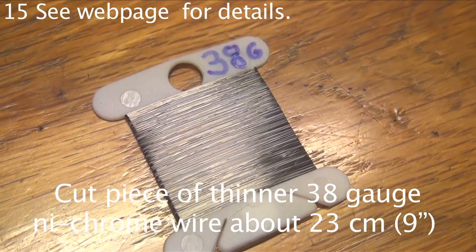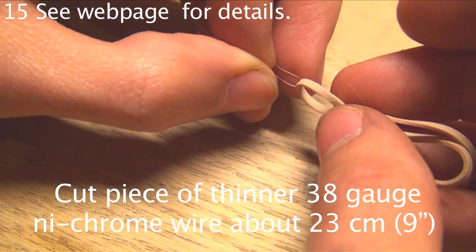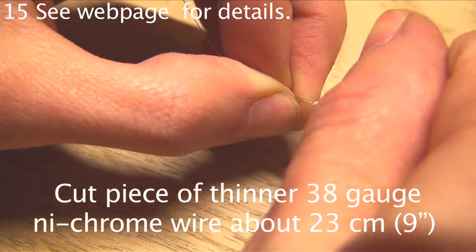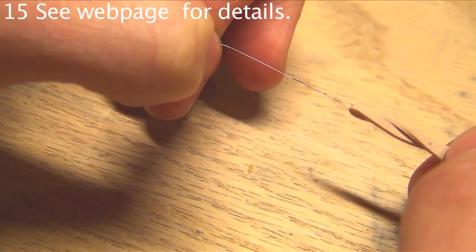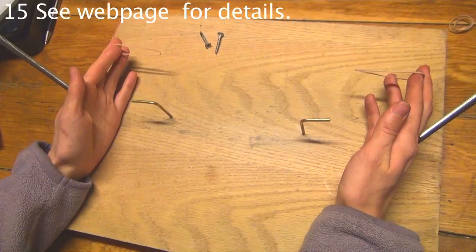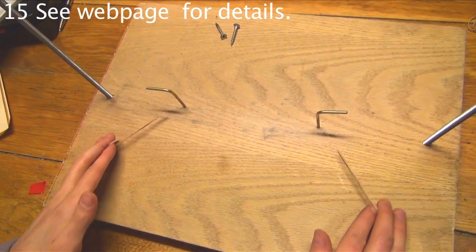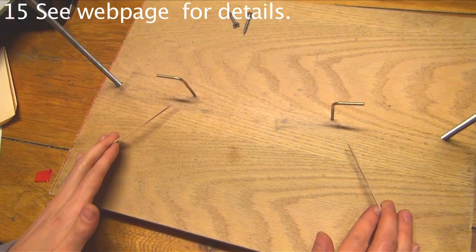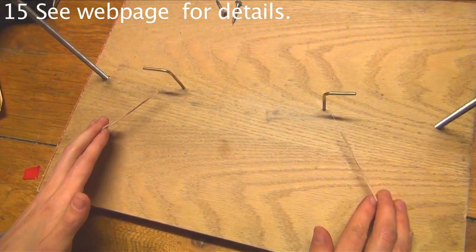Cut a piece of the thinner 38 gauge nichrome wire. Twist the ends onto rubber bands at least five turns so it doesn't come off. The nichrome wire will bend around the bronze L's at about a 45 degree angle and the rubber bands will hook onto wood screws.